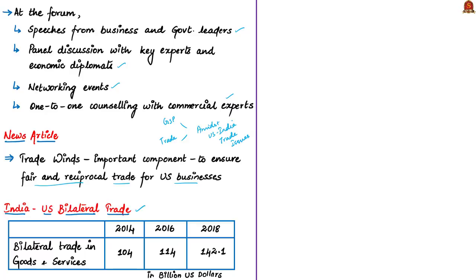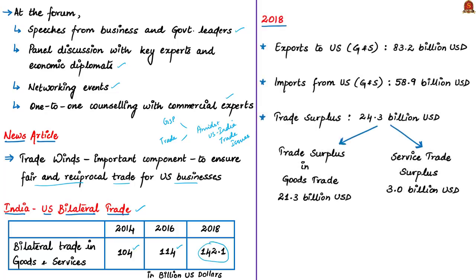In this context, let us know some facts related to bilateral trade between India and the United States. India-US bilateral trade in goods and services increased from US$104 billion in 2014 to US$114 billion in 2016. For the year 2018, this stands at US$142.1 billion, where Indian exports to the US stand at US$83.2 billion and imports from the US stand at US$58.9 billion, meaning India has a trade surplus of US$24.3 billion with the United States.